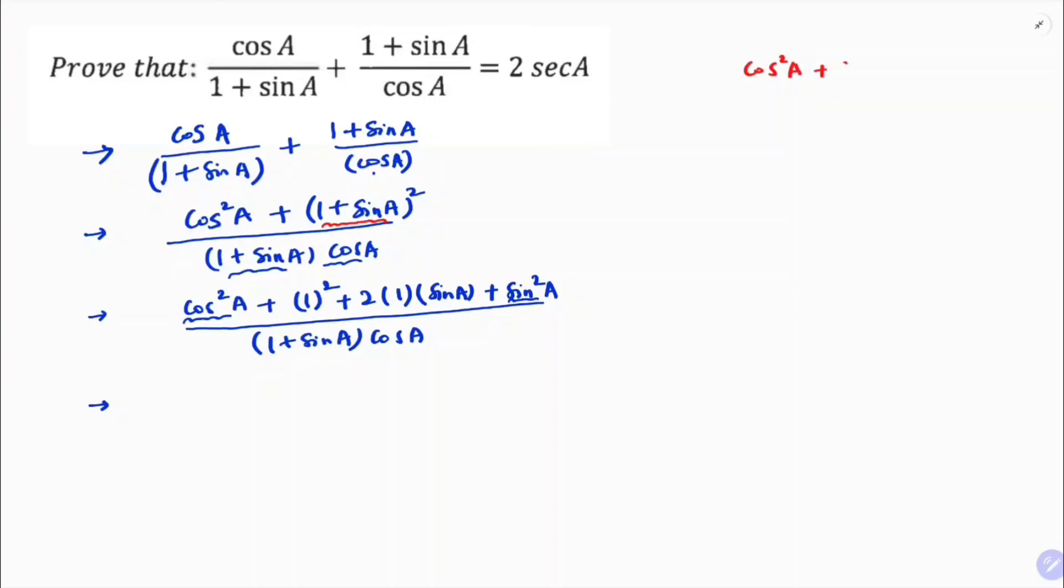Cos square A plus sin square A, its identity, its value is 1, so 1 plus 1 is 1, 2 into 1, 2 sin A, by 1 plus sin A into cos A.